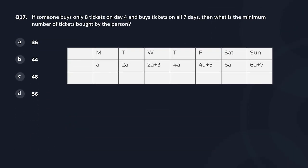Next question: if someone buys only eight tickets on day four and buys tickets on all seven days, what is the minimum number of tickets bought by the person? If I am buying eight tickets on day four, I can start with one ticket on Monday, two tickets on Tuesday, two plus three — five tickets on Wednesday, then eight on Thursday. Minimum on Friday should be nine, Saturday must be more than nine so keep it as 10, and Sunday minimum is six plus seven — 13. Total: eight plus two is 10, plus nine is 19, plus one is 20, plus 10 is 30, plus 13 is 43, plus five is 48. So that is my answer — Option C.